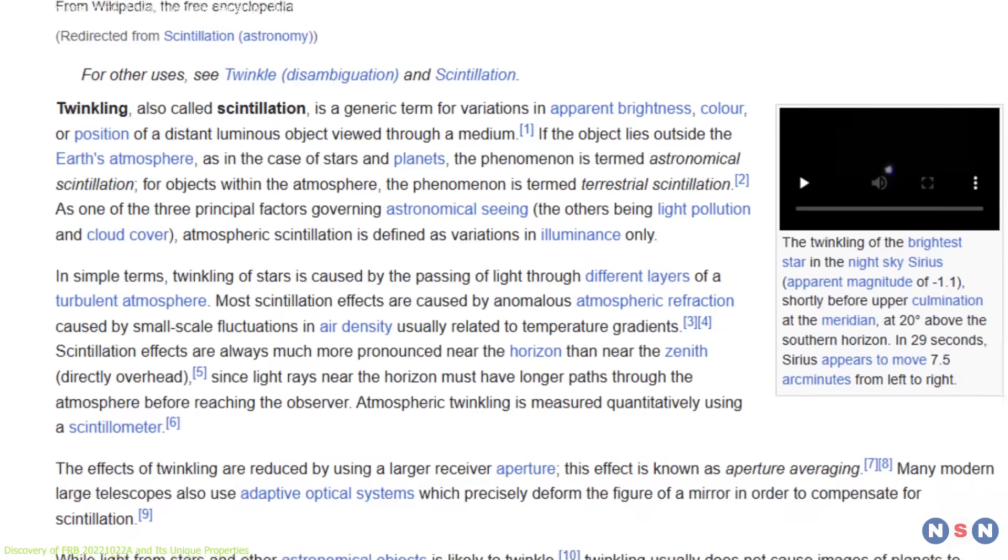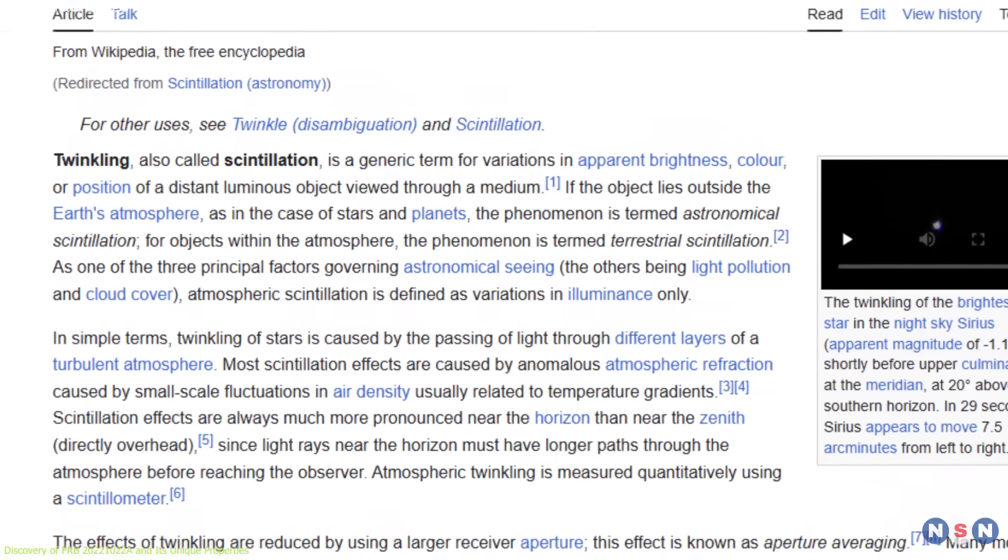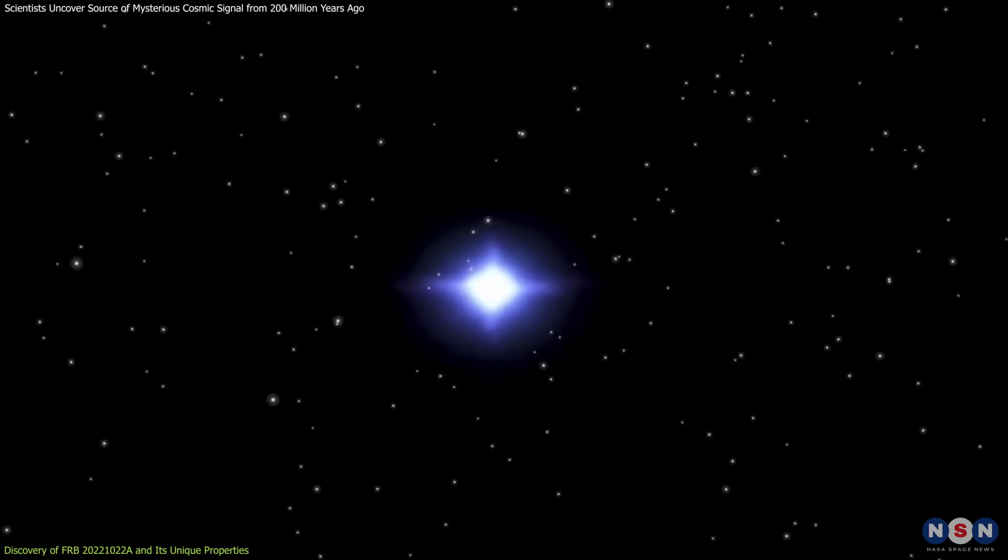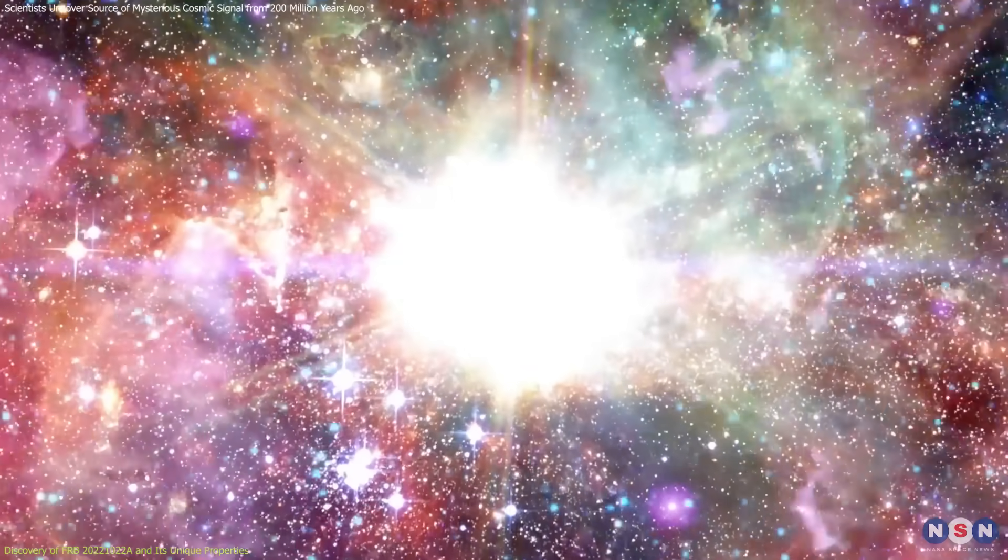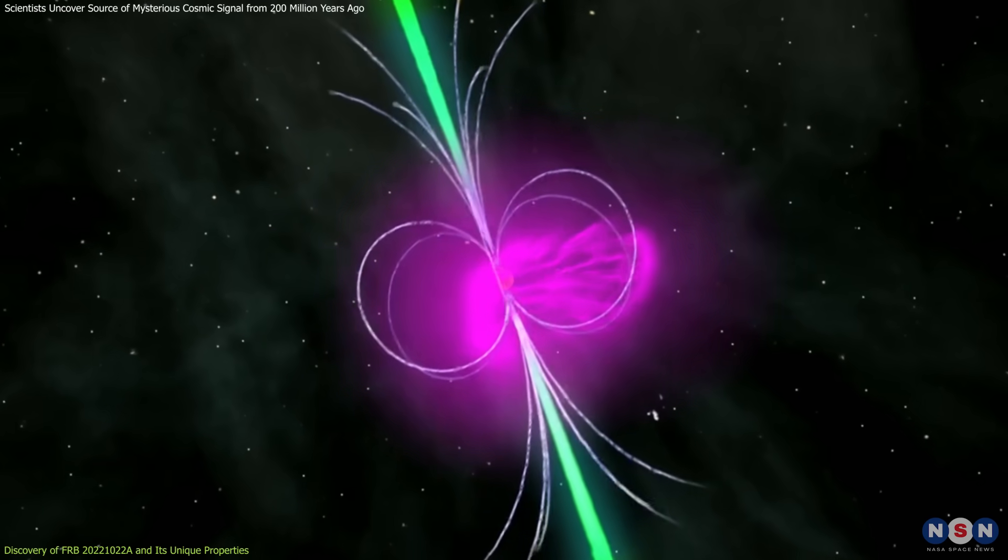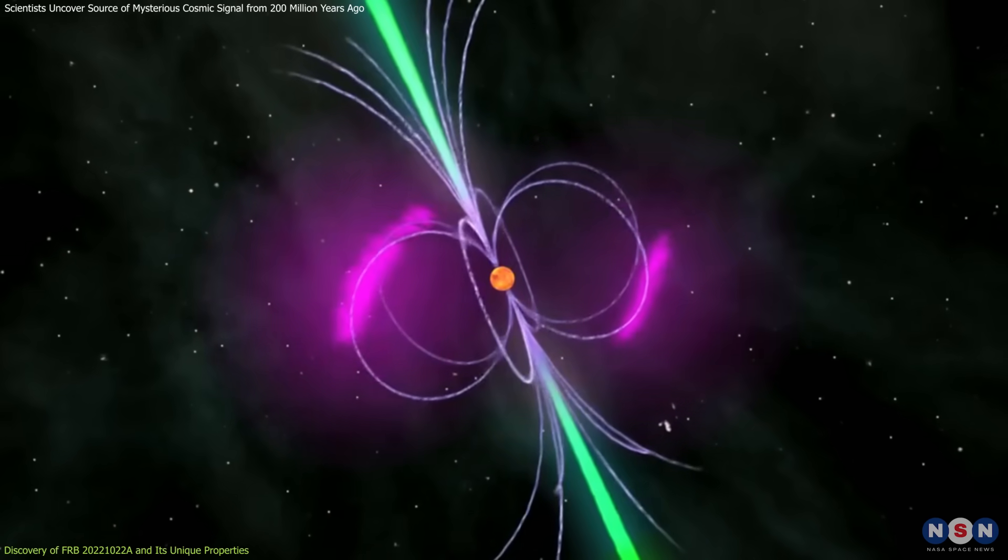To trace its origin, scientists relied on an optical phenomenon called scintillation. This occurs when light from a small, bright source passes through turbulent interstellar gas, causing it to twinkle. By analyzing how the signal twinkled, researchers were able to determine the size and location of the emission region.